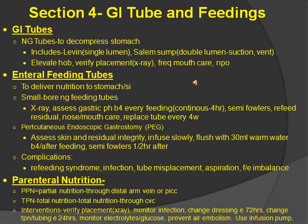GI tubes — NPO. GI tubes consist of NG tubes, which stands for nasogastric — going in through the nose to the stomach. Used to decompress the stomach. These include Levin, which is a single lumen, and Salem sump, which is a double lumen with suction and a vent. You should elevate the head of bed and verify placement. Initial verification is always done by x-ray. After that, you can aspirate gastric contents and measure the pH — it should be less than 4, meaning it's in the stomach. Do frequent mouth care and keep the patient NPO.